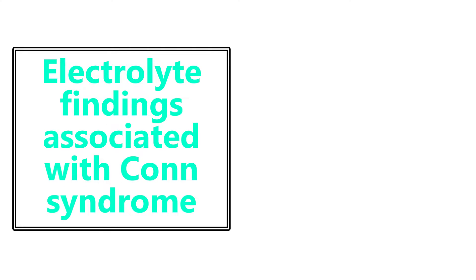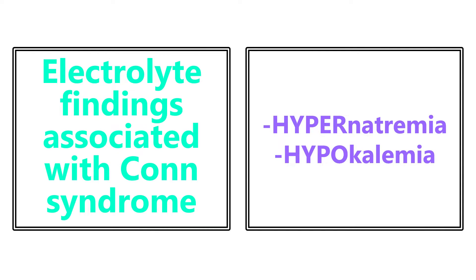Electrolyte findings associated with Conn syndrome. Conn syndrome is primary hyperaldosteronism — over-secretion of aldosterone, a mineralocorticoid that reabsorbs sodium and excretes potassium. With too much aldosterone, we get increased sodium reabsorption and increased potassium excretion, giving us hypernatremia and hypokalemia. Very high yield to know the physiology here.